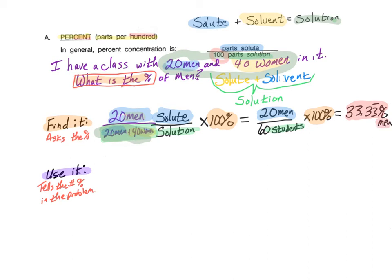The same question could have been asked a slightly different way. Here we can see the question now says, my class of 60 students has 20 men. Now what is the percentage of men? Here we can see that our solute, which is our number of men, is still the same. But in this version, we've told you that we have 60 students total, which is our solution. In this case, we're looking at this section of the problem, and we end up with the same answer.